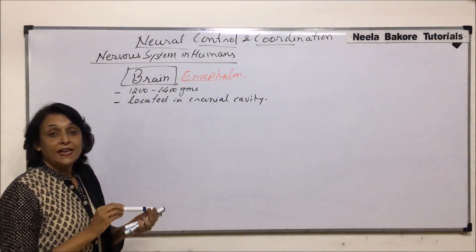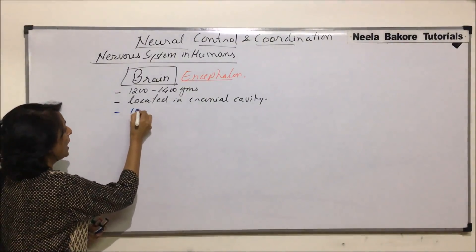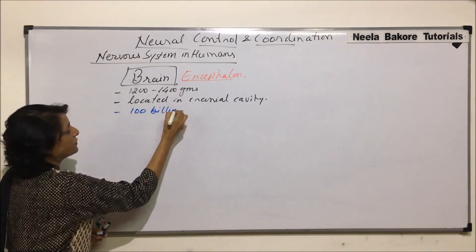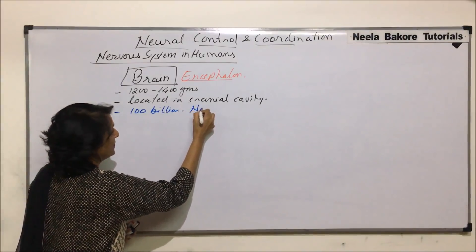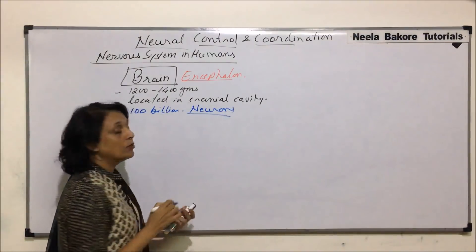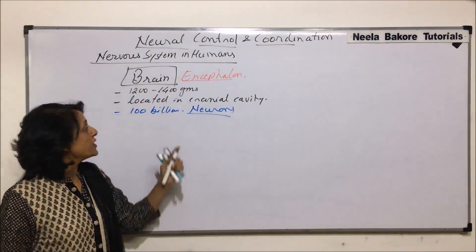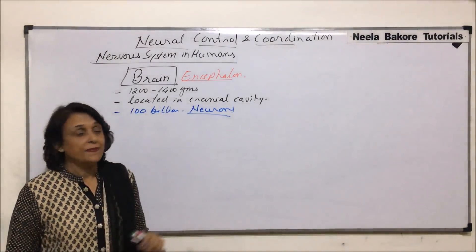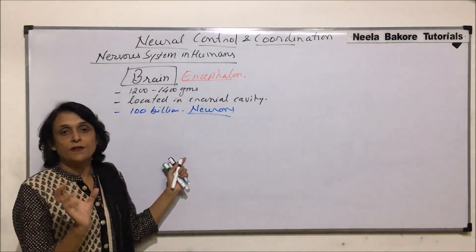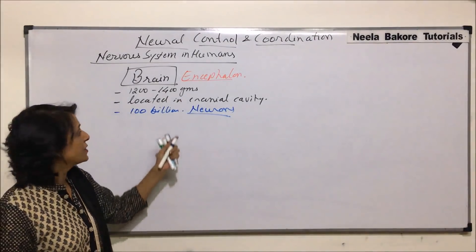The complete brain is made up of about 100 billion neurons. The weight varies from 1200 to 1400 grams in healthy adults.